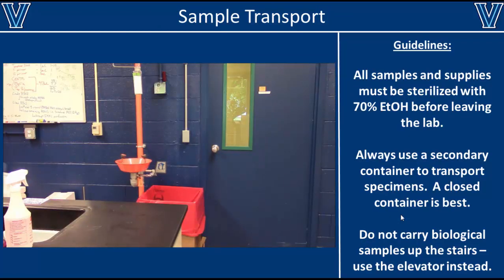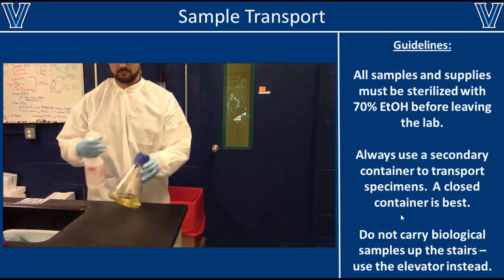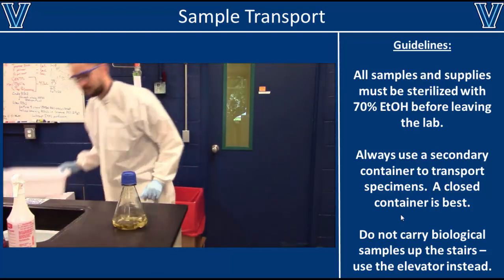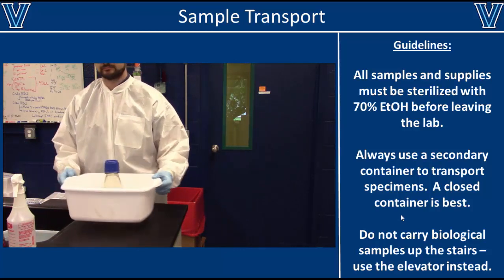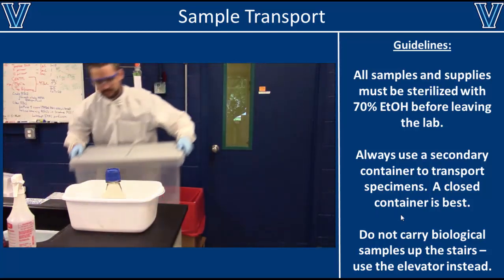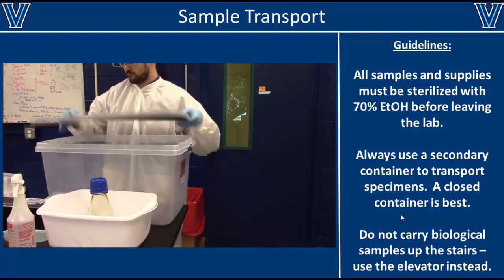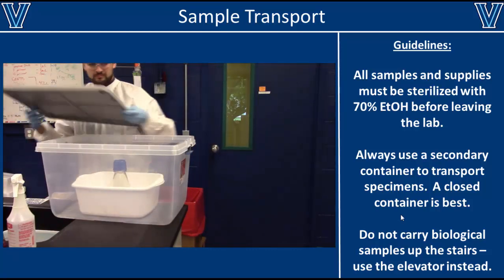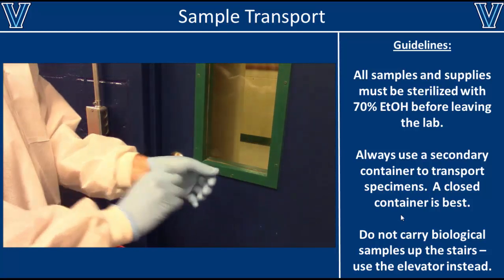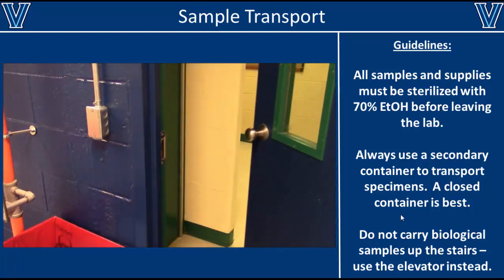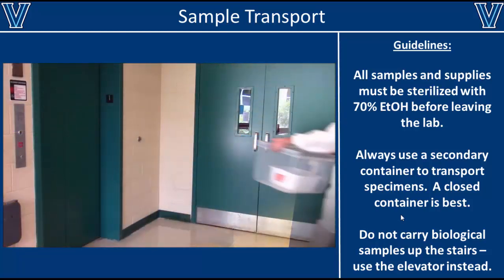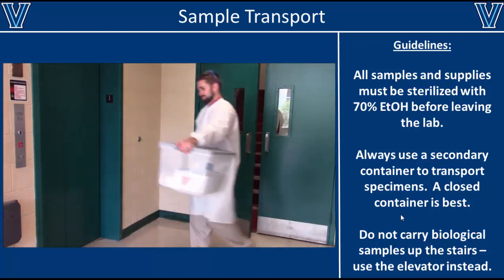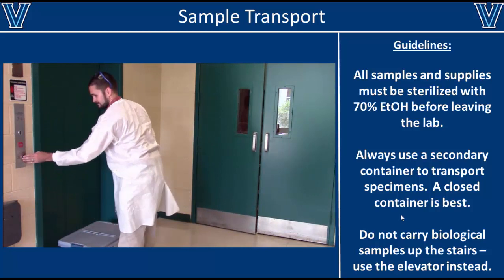If you are working in a BSL-1 or BSL-2 lab, there are some special rules you must consider when transporting samples between labs. First of all, the exterior of any samples must be thoroughly sterilized with 70% ethanol, and a secondary container should always be used to carry it. Preferably, that secondary container should have a locking lid to prevent any spills in case you trip. When leaving the lab, remember to always remove your gloves before opening the door — you don't want to contaminate doorknobs. When carrying your samples between floors, you should not use the stairs. Instead, use the elevator, as it's much safer and there's less risk of tripping.